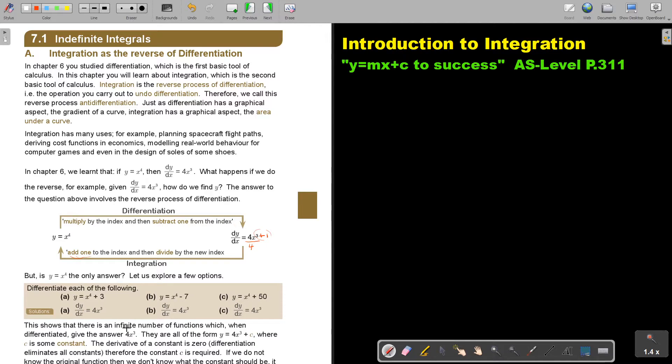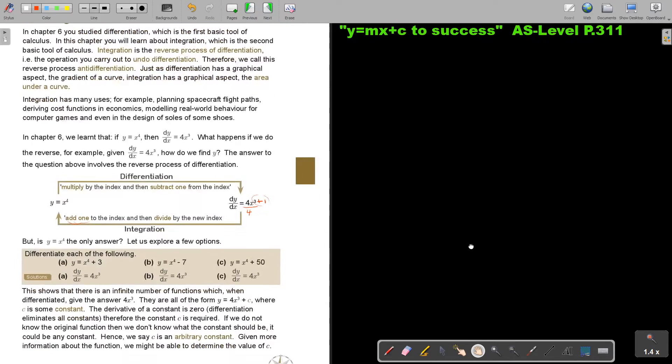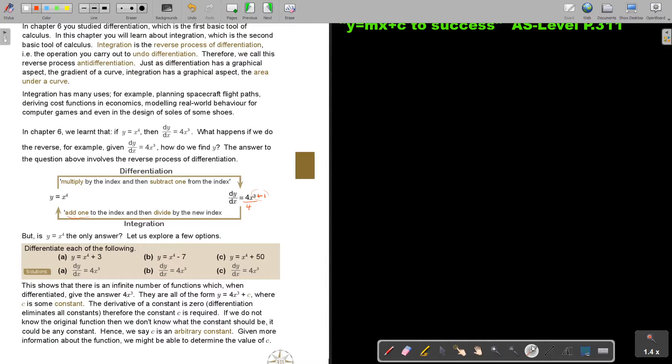This shows that there is an infinite number of functions which, when differentiated, give the answer of 4x to the power of 3. They are all of the form y equals x to the power of 4 plus c, where c is some constant. The derivative of a constant is 0. Differentiation eliminates all constants.